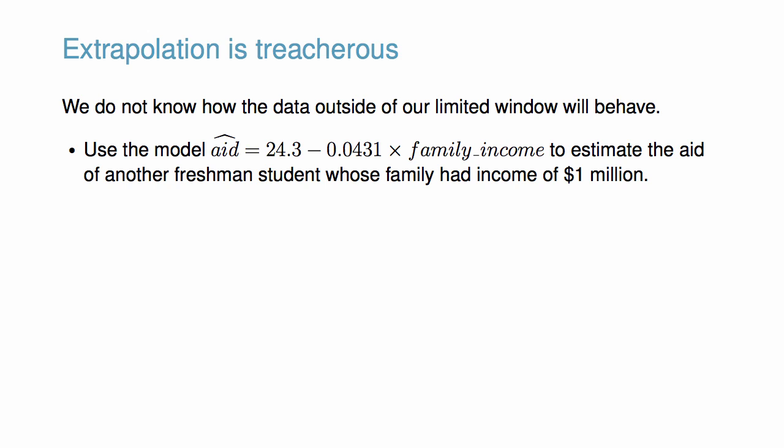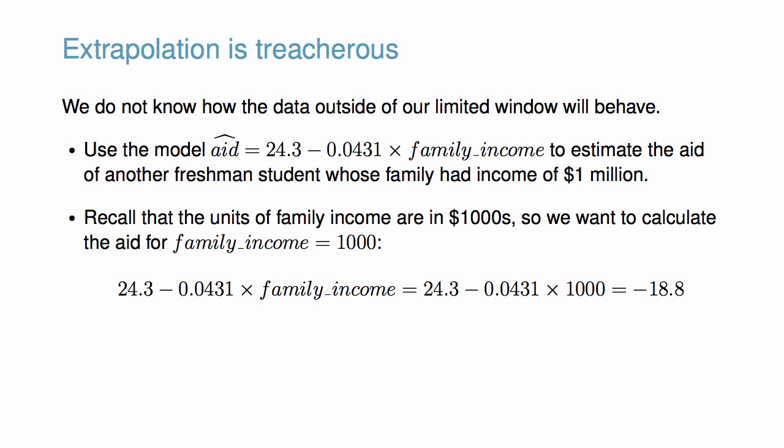Let's use the model estimated aid = 24.3 - 0.0431 × family income to estimate the aid of another freshman student whose family has income of $1 million. Recall that the units of family income are in thousands of dollars. So to calculate the aid for a family making a million dollars, we would set the family income variable equal to $1,000 and be left with an estimated aid of -18.8.